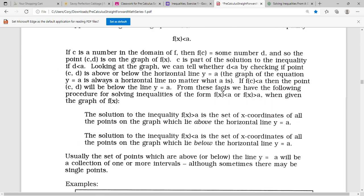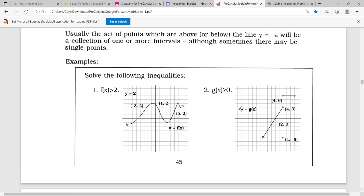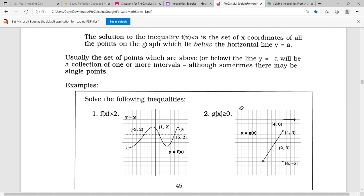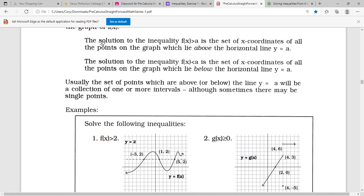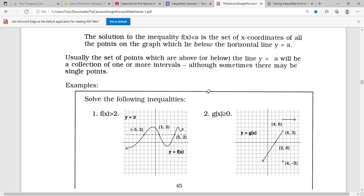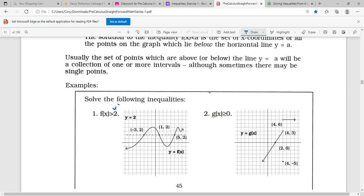All right. All of this stuff right here, I want you guys to read over that, but I'm just going to go straight to the examples. So when we say one thing is greater than the other, the solution to the inequality f of x is greater than a is a set of all the x coordinates of the points on the graph which are above the horizontal line y equals a. So let's say that we have f of x is greater than 2. We're going to find 2 on our y line, right? Because this 2 represents our y line, and we're trying to figure out all the x's that are going to be here when y is 2 or greater than 2.